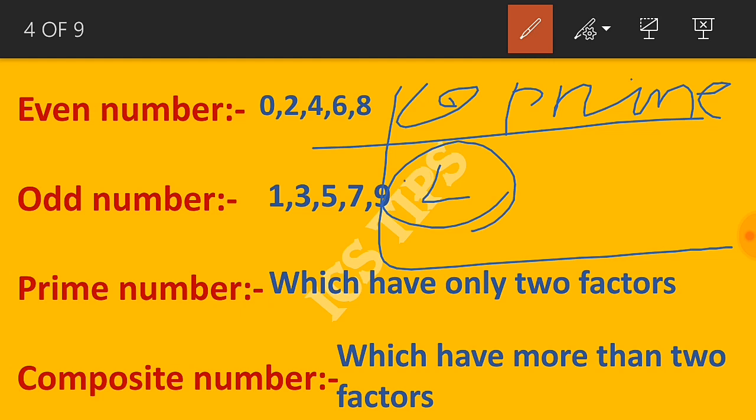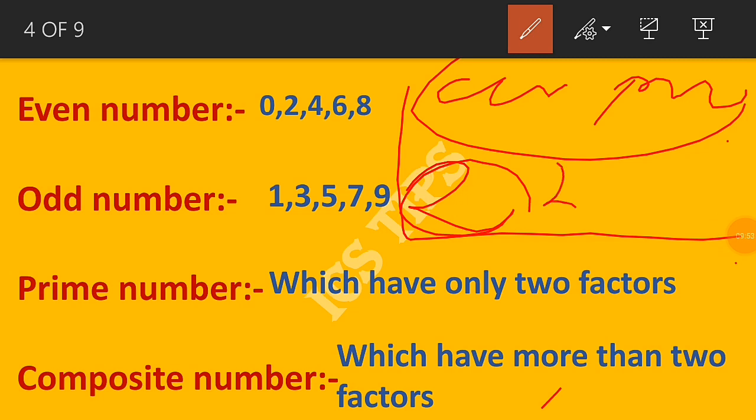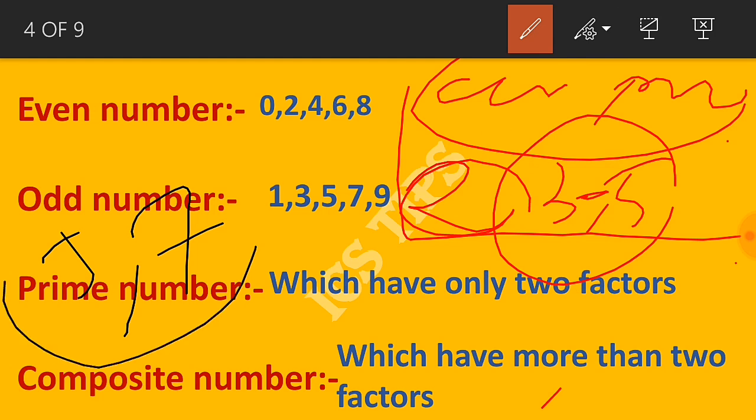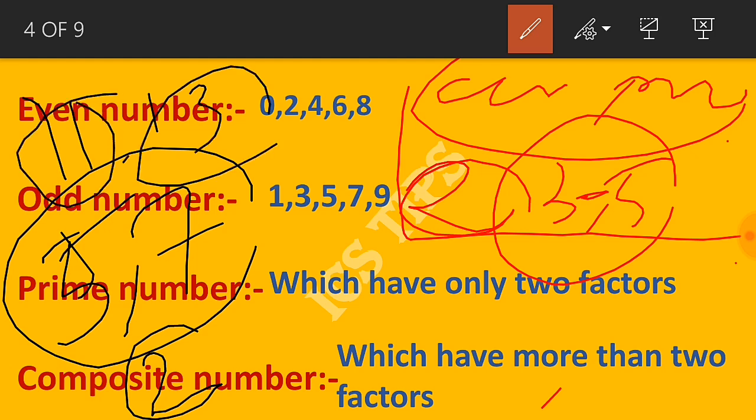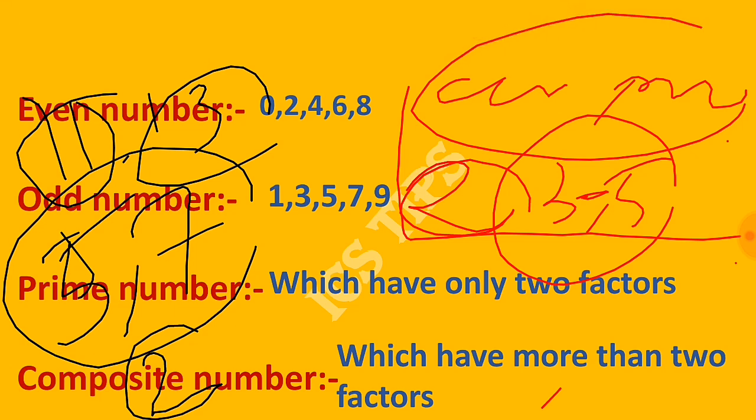Co-prime numbers are two prime numbers with a difference of 2, like 3 and 5, or 5 and 7, or 11 and 13.